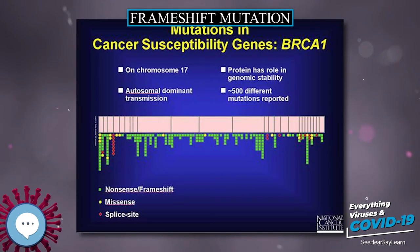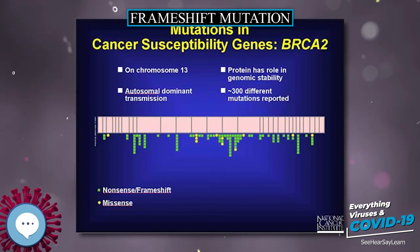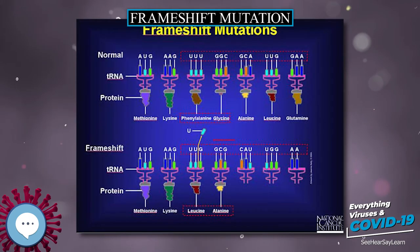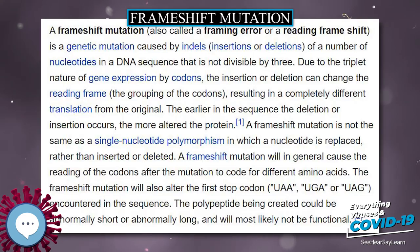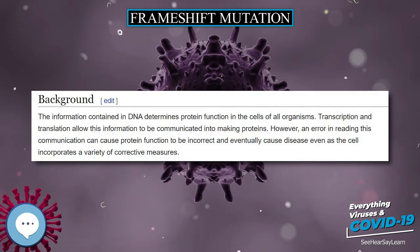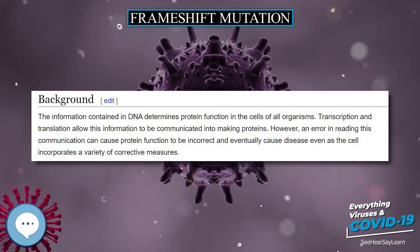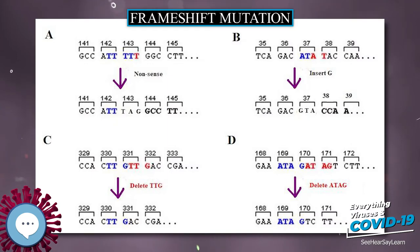The grouping of the codons results in a completely different translation from the original. The earlier in the sequence the deletion or insertion occurs, the more altered the protein. A frameshift mutation is not the same as a single nucleotide polymorphism, in which a nucleotide is replaced rather than inserted or deleted. A frameshift mutation will in general cause the reading of the codons after the mutation to code for different amino acids.